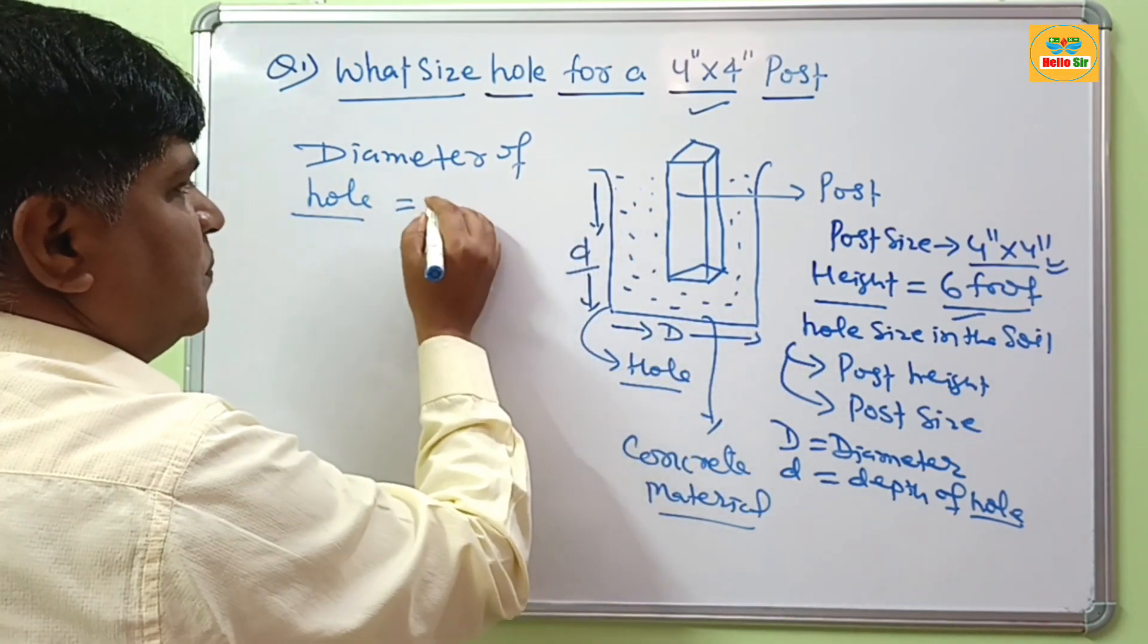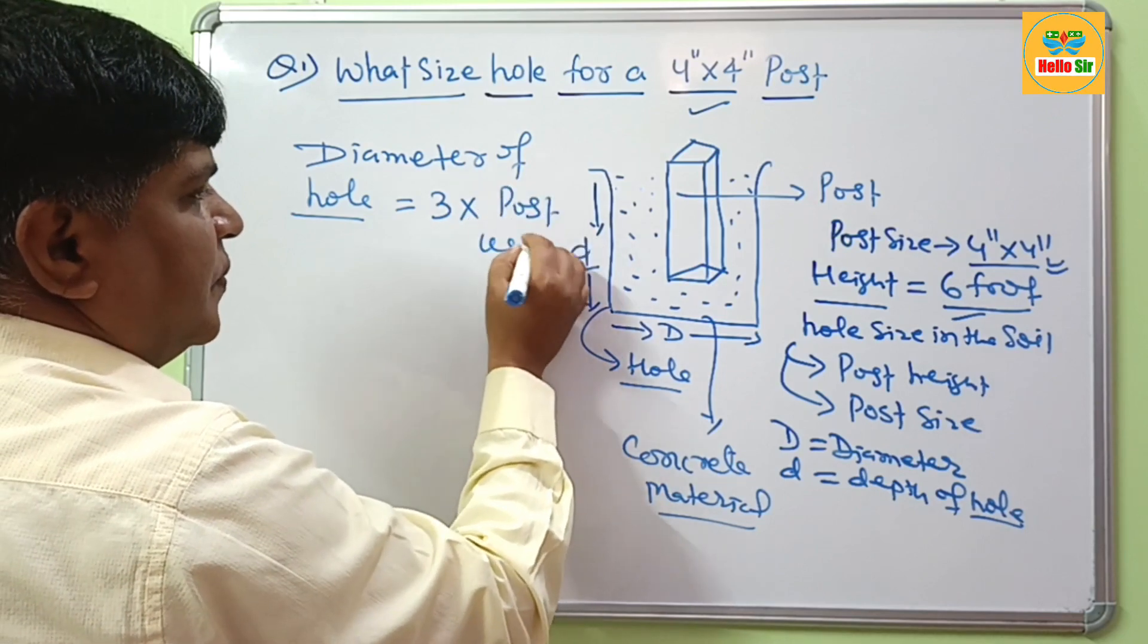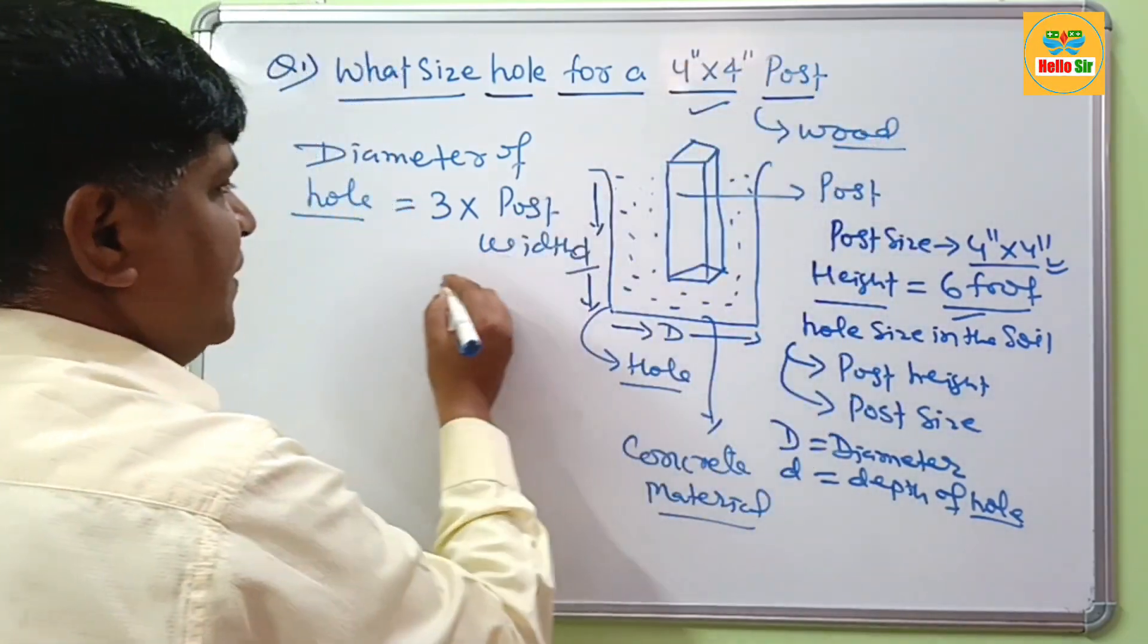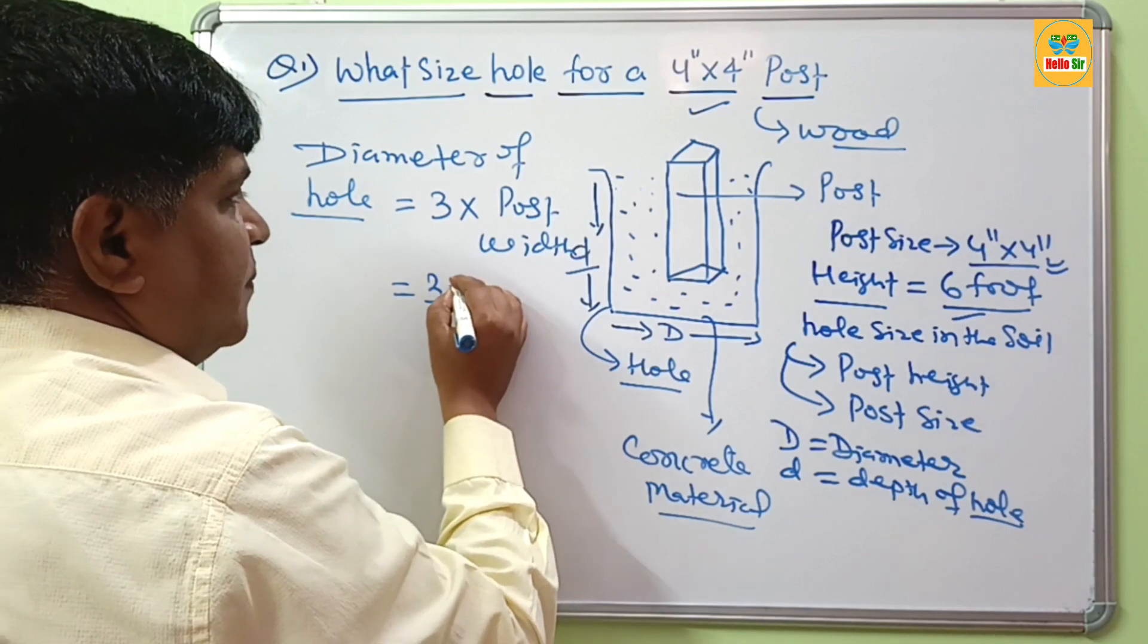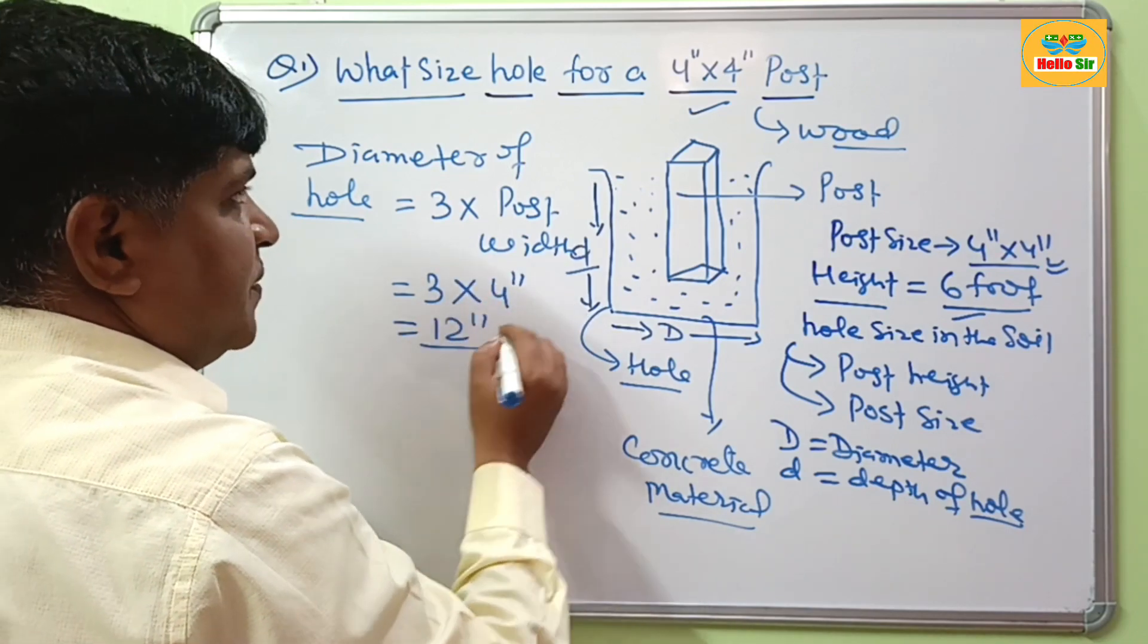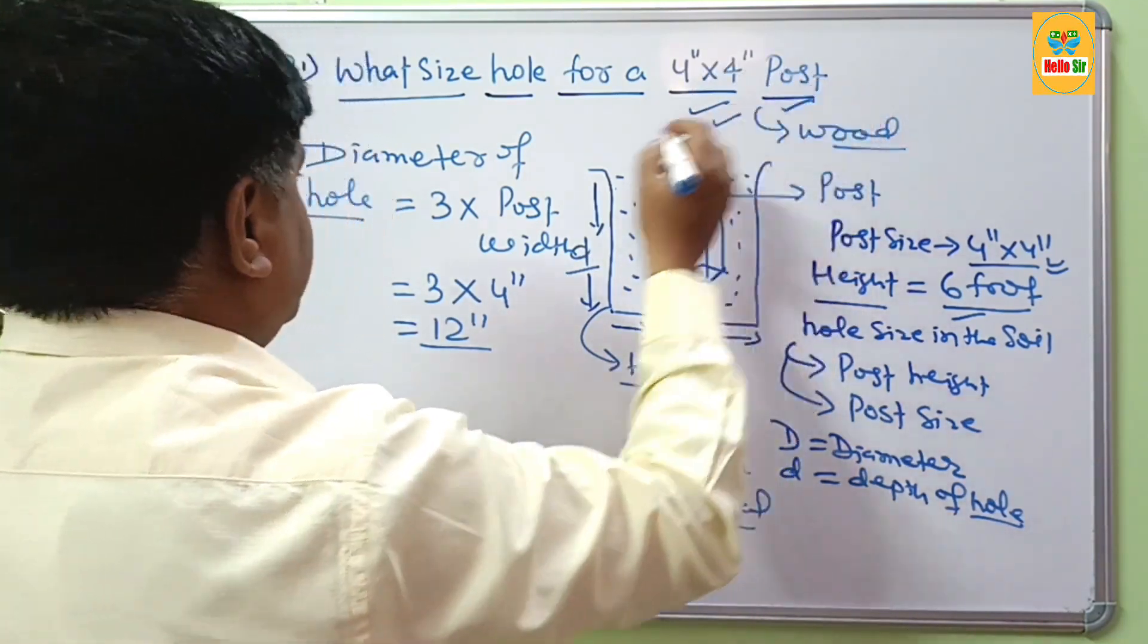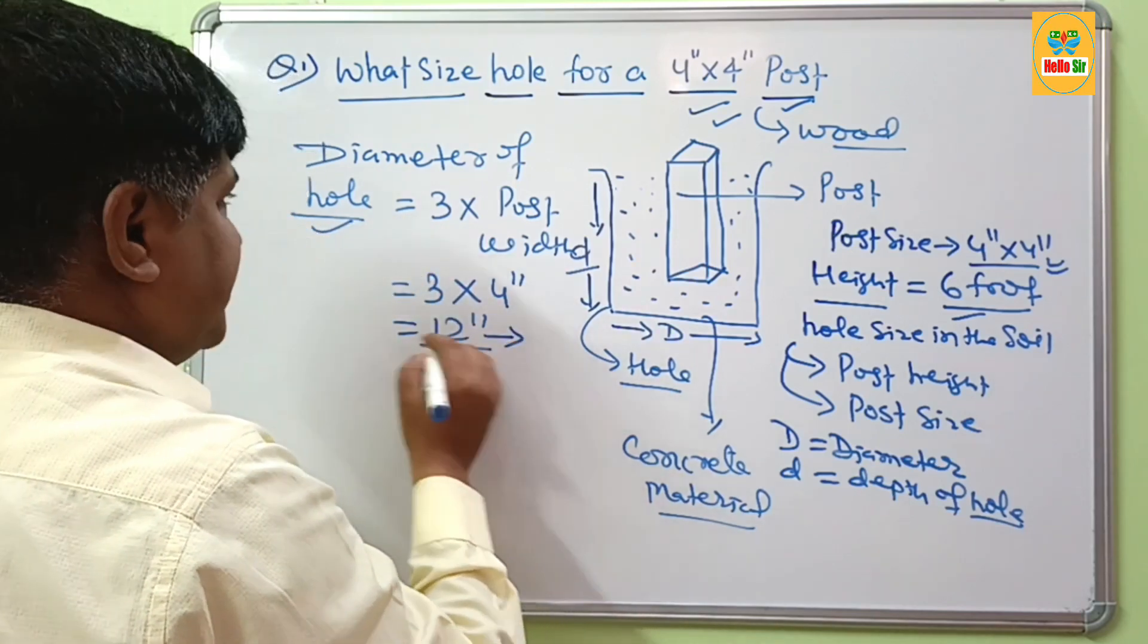The diameter of the hole should be 3 times the post width. Your post is made of wood and their width is about 4 inches. That's why 3 multiplied to 4 inches, this will come 12 inches. It means if you are setting the post 4 inches by 4, your diameter of the hole size should be 12 inches.